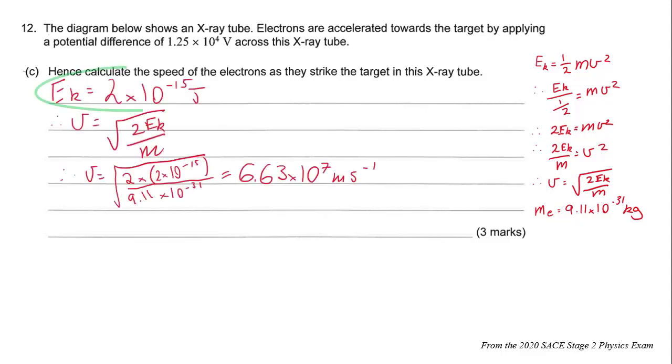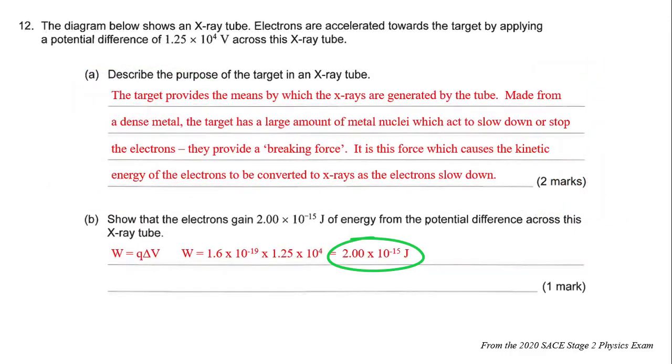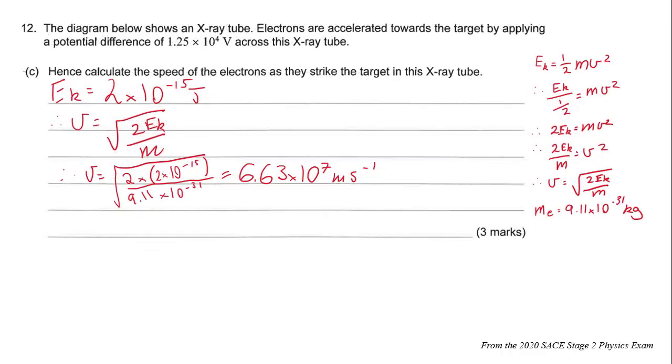Where did that come from? The previous question: W = q∆V, so 2 × 10^-15 joules. We migrate that into the equation itself and you'll end up getting 6.63 × 10^7 meters per second. Quite fast.